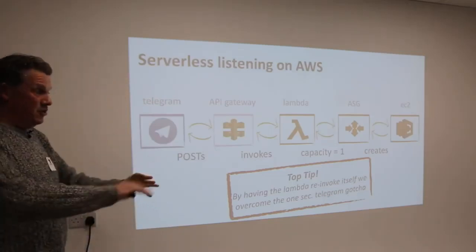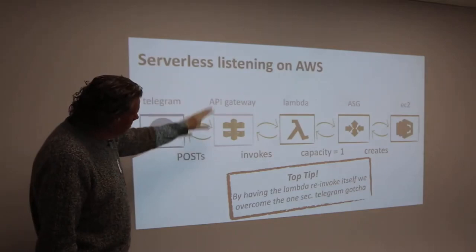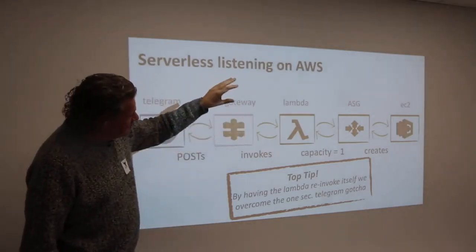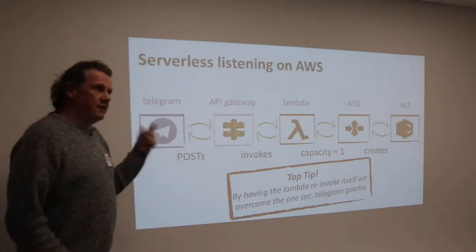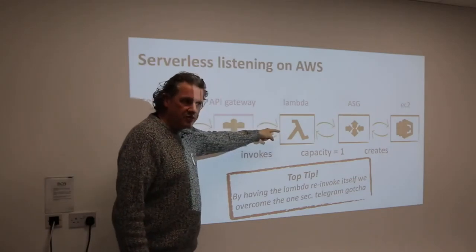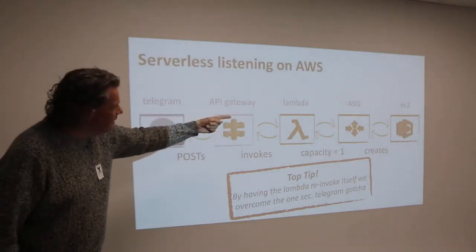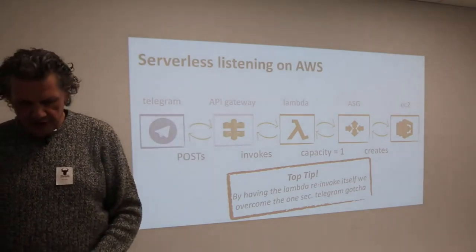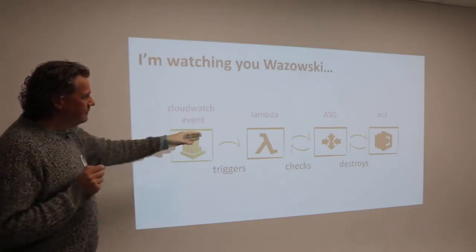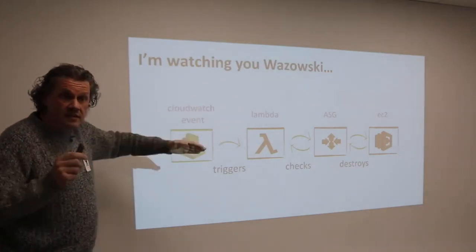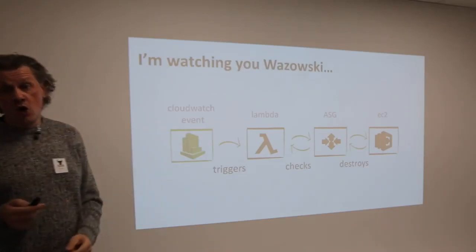We'll do this serverless. Our Telegram bot does a POST into an API Gateway on Amazon, which invokes a Lambda, which sets the capacity to one on the auto scaling group, which creates our bastion host. The trick to get the one-second response is to make the Lambda call itself: the first call from API Gateway re-invokes itself and returns 200, then the second invoke of the Lambda actually does the job. And then we've got the 'I'm watching you' piece: a CloudWatch event that runs every minute, triggers the Lambda, which looks in the auto scaling group for anything with capacity one and sets it to zero.